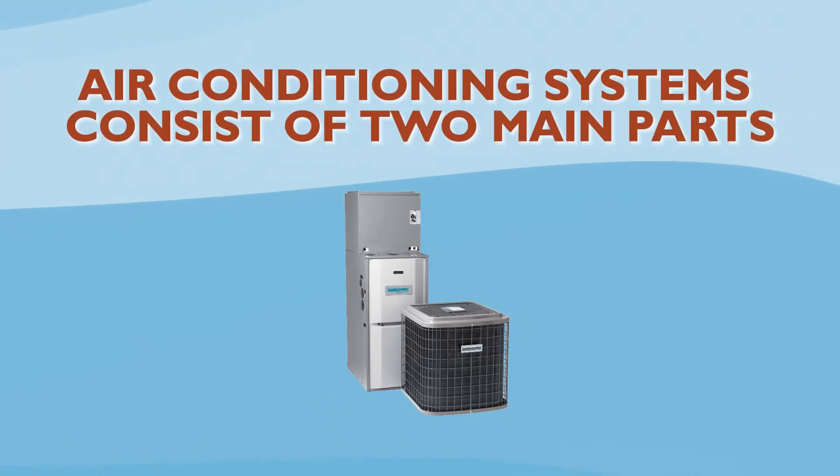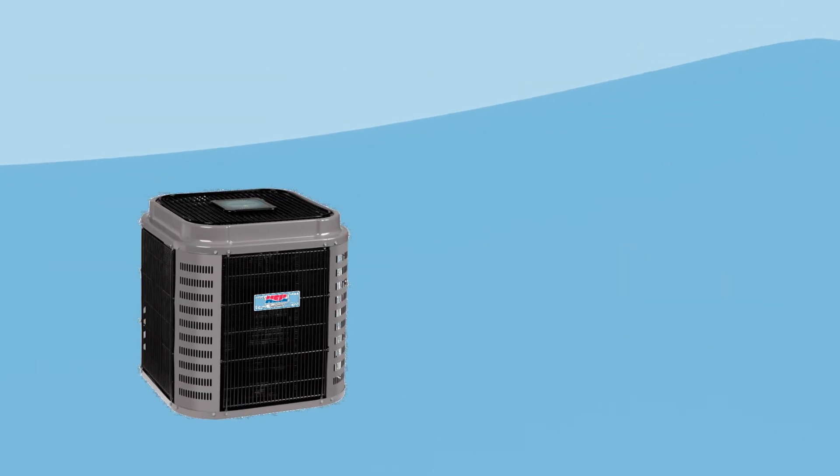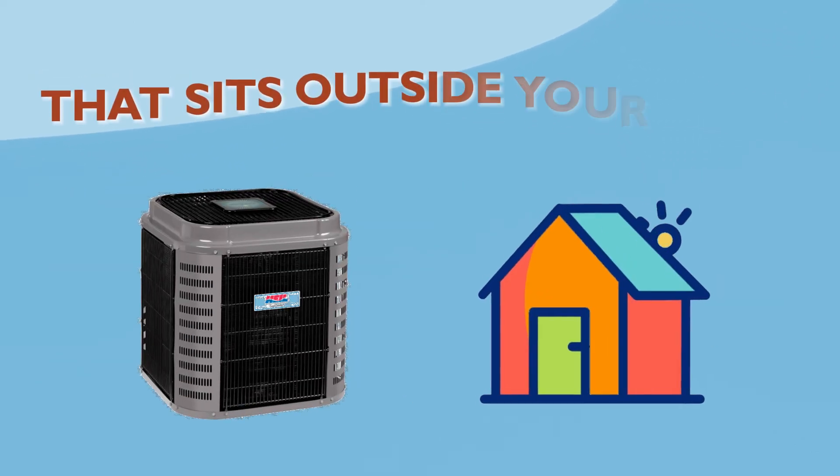Air conditioning systems consist of two main parts: the outdoor condenser and the indoor evaporator. The outdoor condenser is the AC unit that sits outside your home.